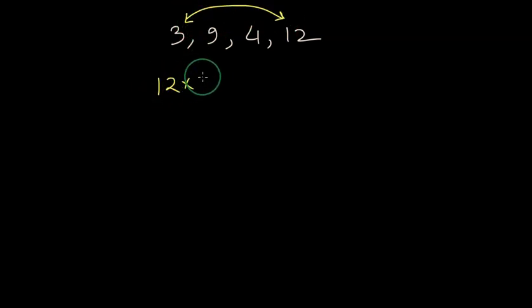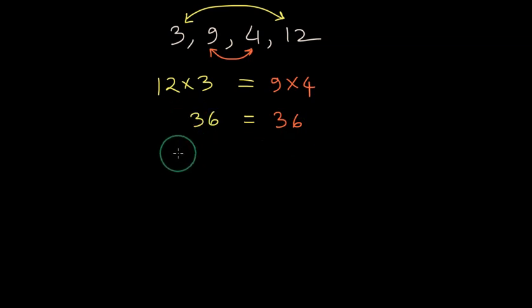Let's take another example. We have 3, 9, 4, and 12. Are these four numbers in proportion? First, we multiply the extreme numbers, which gives us 12 times 3, and see whether this equals the multiplication of the middle numbers, which is 9 and 4. The multiplication of extremes is 36, and the multiplication of middle numbers is also 36. Since both are equal, we can say that 3, 9, 4, and 12 are in proportion.